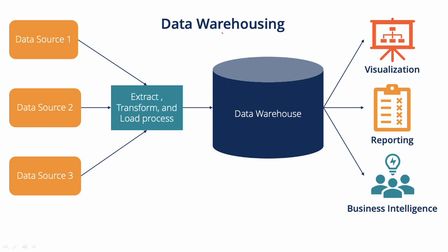First, Data Warehouse. A warehouse is called a Godown — a storage place. So data is a Godown — it stores different types of data. Data Source 1 is Amazon or AWS, Data Source 2 is Google Cloud Platform, Data Source 3 is Microsoft Cloud Platform. So there are three types of data sources, and we will dump things — collect data — into the data warehouse.